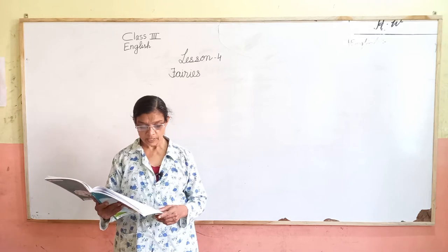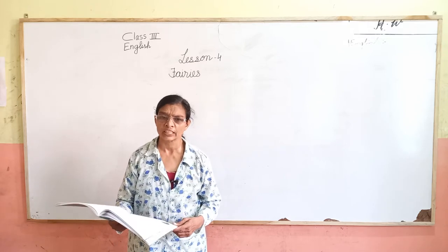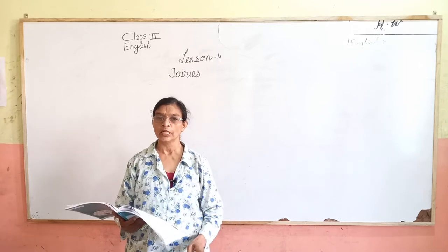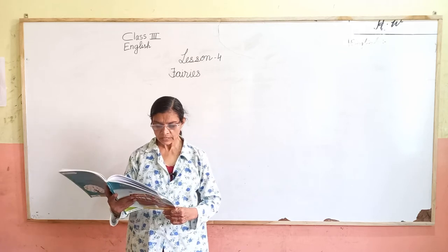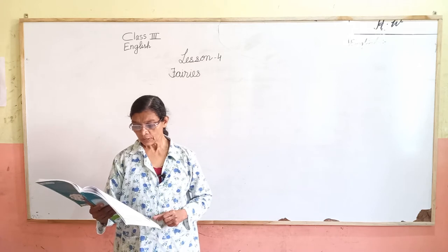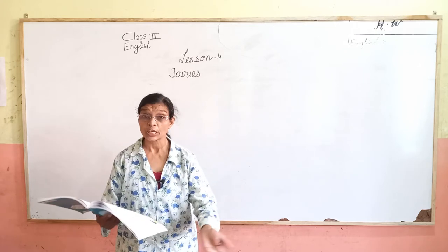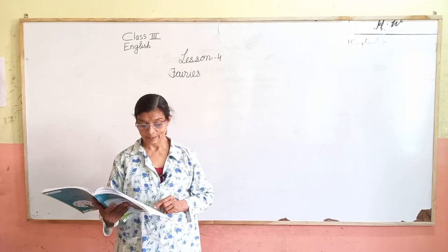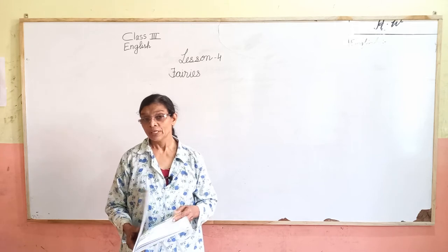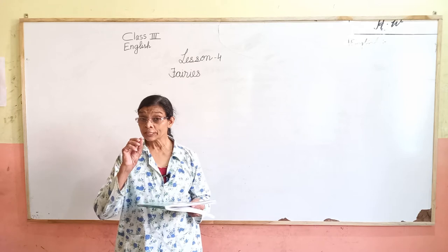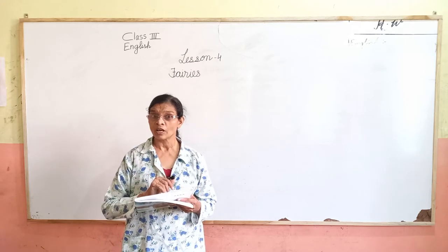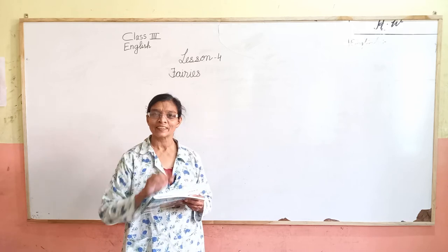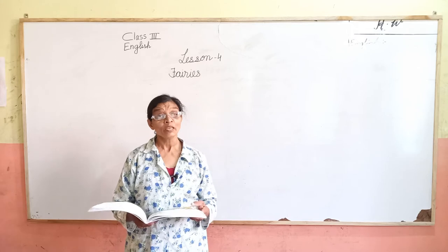Grandma says a blue moon is best for fairy light. Blue color ka jo hota hai, usme fairy light milti hai — fairy cup milti hai. And in a peach color ka flower — if I look I shall see a fairy there. Peach color ke flower mein ek fairy mil sakti hai — a little fairy baby, no bigger than a pea.